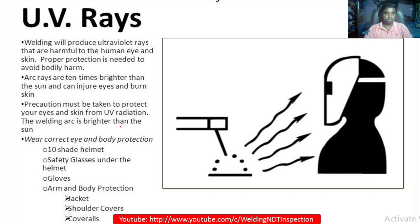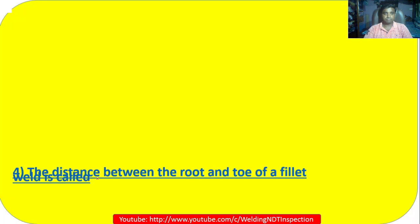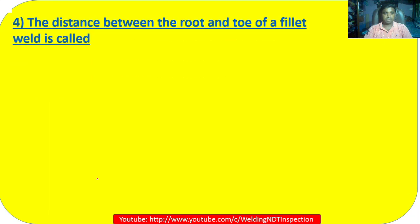For protection from UV radiation during arc welding, you need a welding helmet, safety glasses under the helmet, gloves, and arm and body protection such as a jacket and shoulder covers, since the welding arc is brighter than the sun and can injure eyes and burn skin.